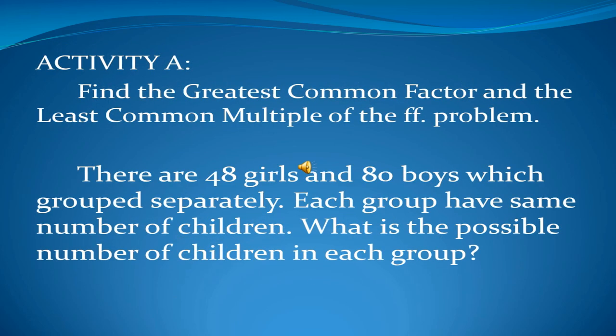Now you are going to answer Activity A. You are going to find the greatest common factor or GCF and the least common multiple or LCM of the following problem: There are 48 girls and 80 boys which group separately. Each group has the same number of children. What is the possible number of children in each group?